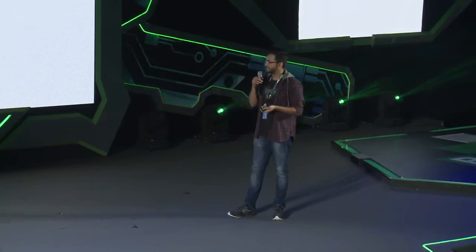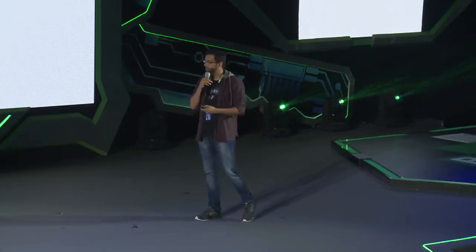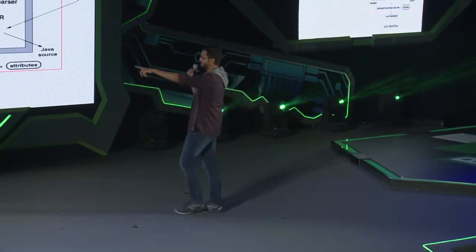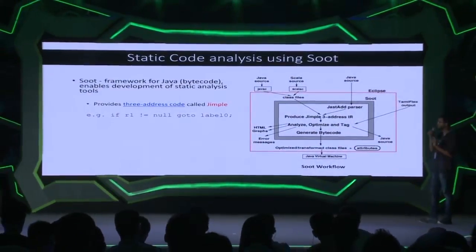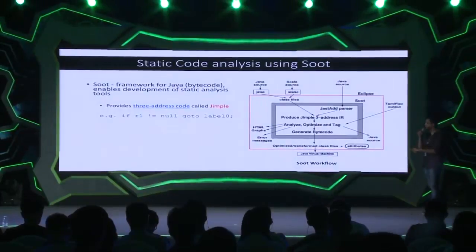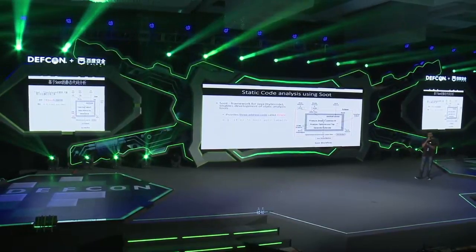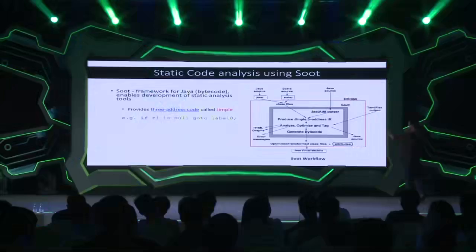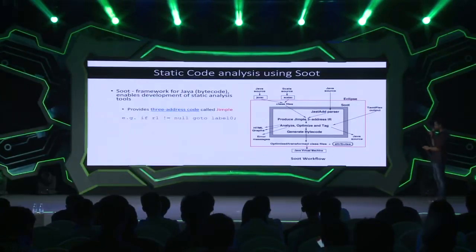Soot is a framework for Java bytecode analysis. It can be used to implement your own analysis and provides a three-address code representation called Jimple. For example, in any line of Jimple code, you will not see more than three operands in one line — like R1, null, and label0 in an if statement. It's very simple compared to Java's complicated structures. The Soot framework takes Java source code or class files, converts them to Jimple three-address intermediate representation, and then you can perform analysis, optimization, and convert back to class files.